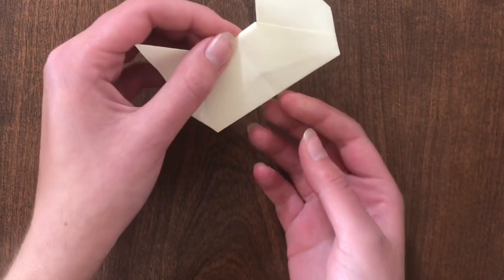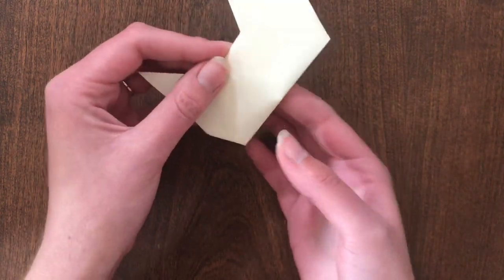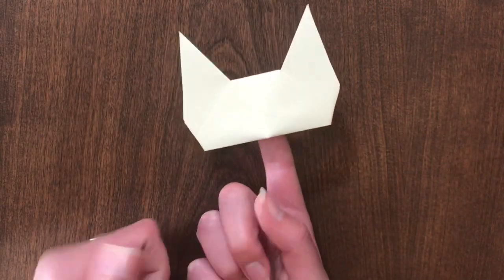Flip the paper over. Use the opening for your finger. Now we have an origami finger puppet. Flip the top of the nose.